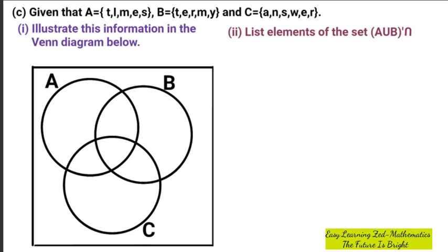The first question, C1, is asking us to illustrate this information in the Venn diagram below. As you can see, that is the Venn diagram which has got set A, set B, and set C in it. So we want to demonstrate that information in this Venn diagram. What we're going to do is rewrite these sets here.